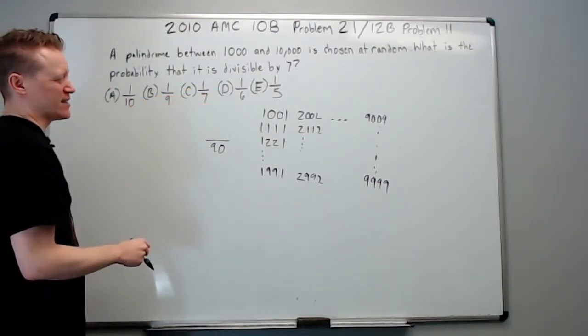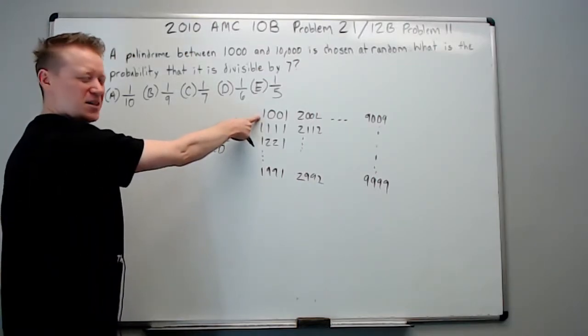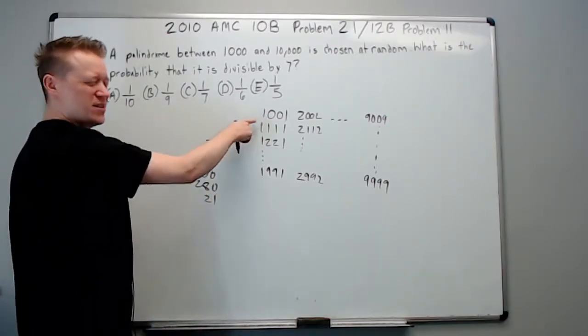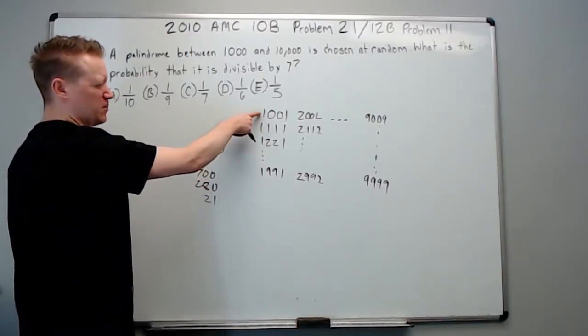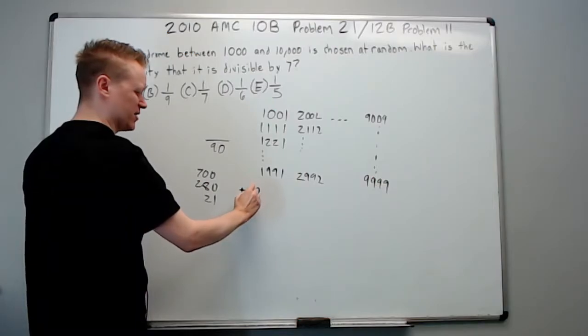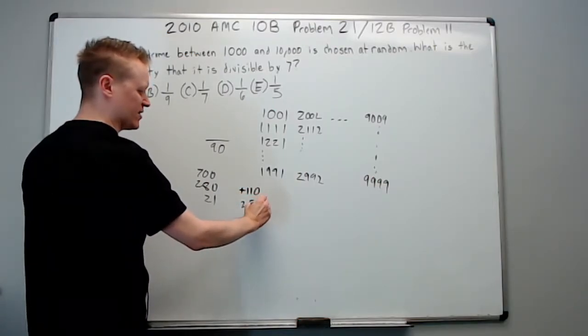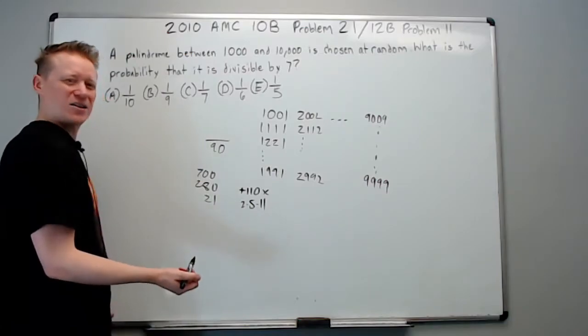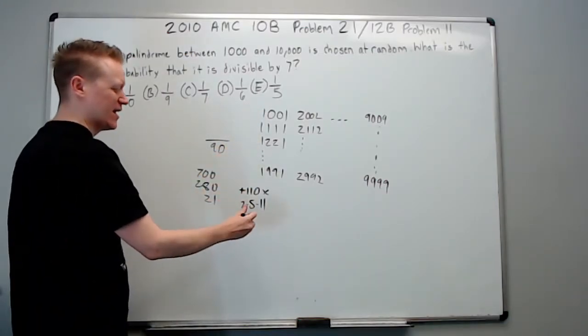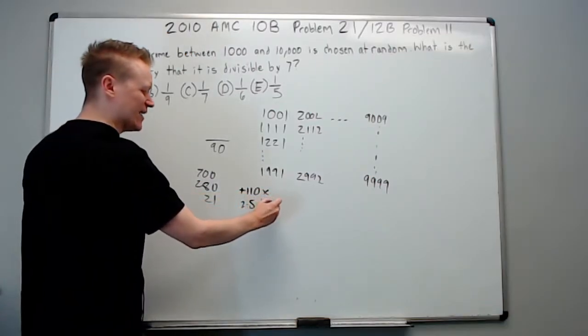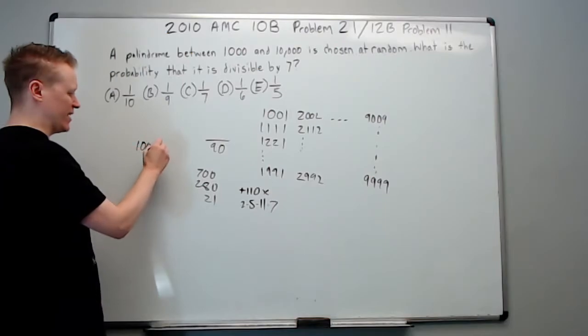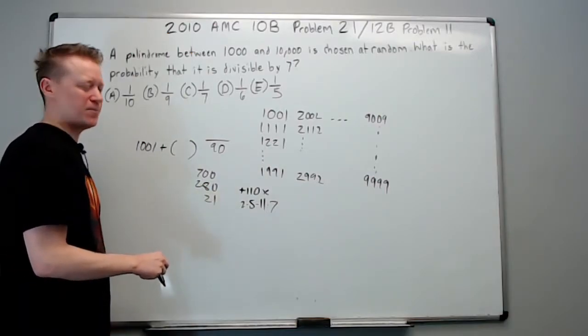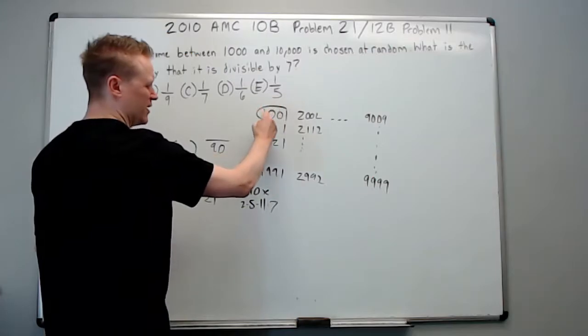What is the probability that's divisible by 7? I think if we just start with 1,001, it's 700 plus 280 plus 21. Those are all multiples of 7, so this is a multiple of 7. Then we want to think about what are we adding to get to this one? We're adding 110, which is 2 times 5 times 11. There's no 7 in that, and in fact, if I do any multiple of 110, it's not going to work if I add 210s unless the x, the multiplier, is a 7.